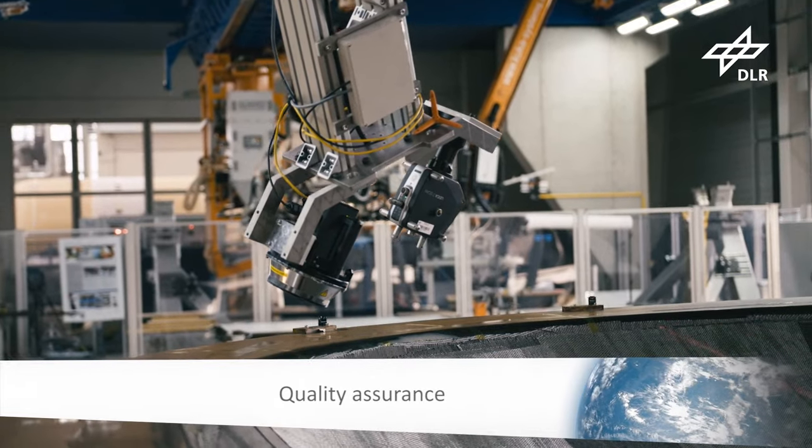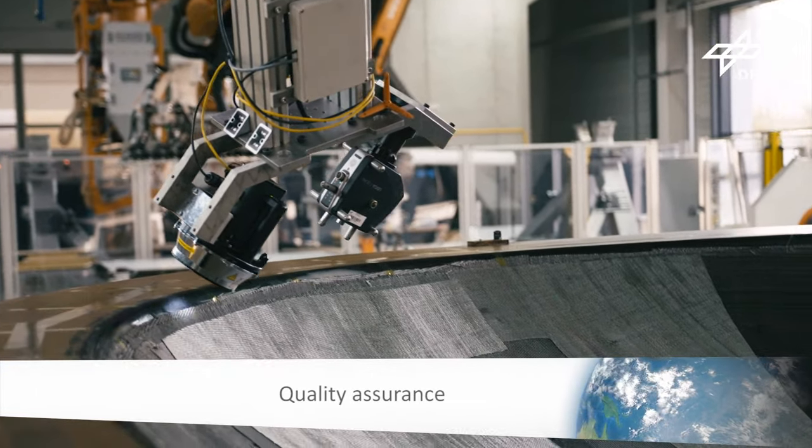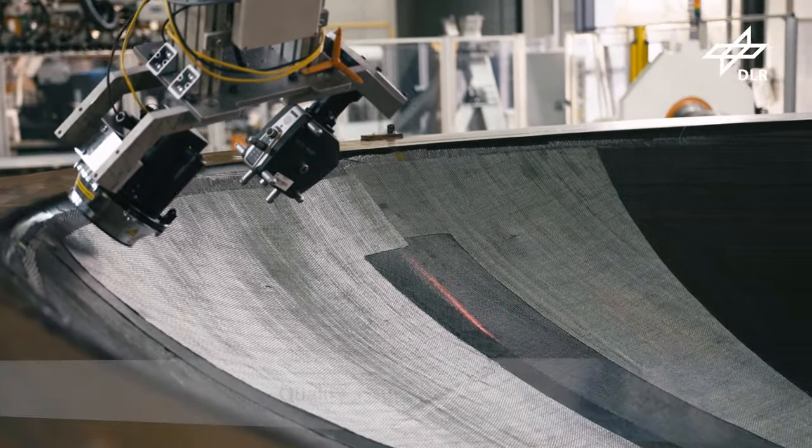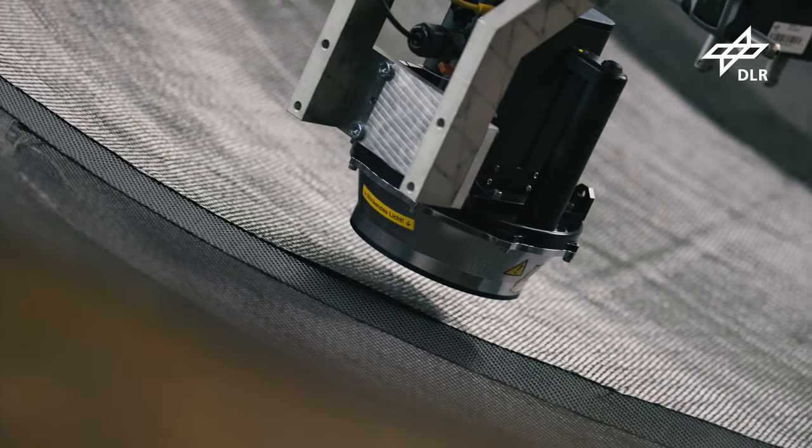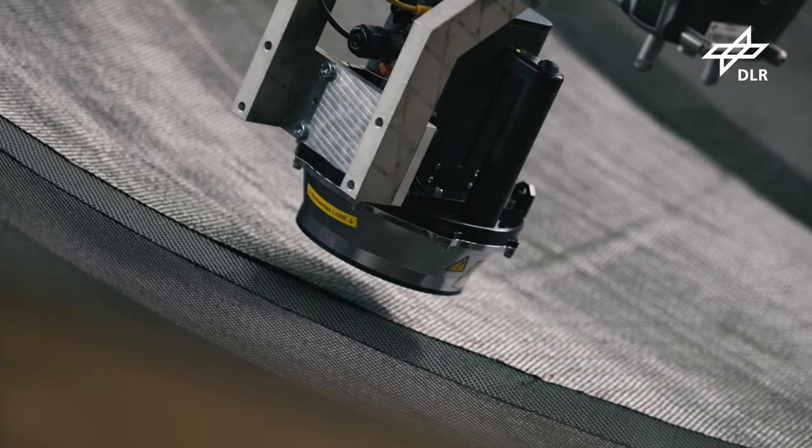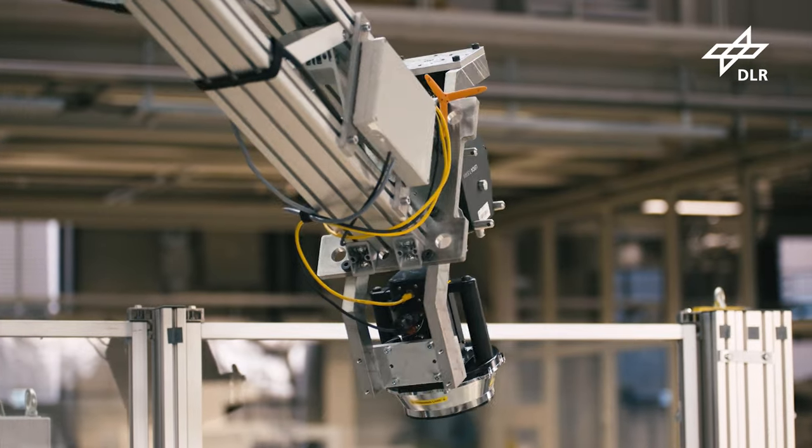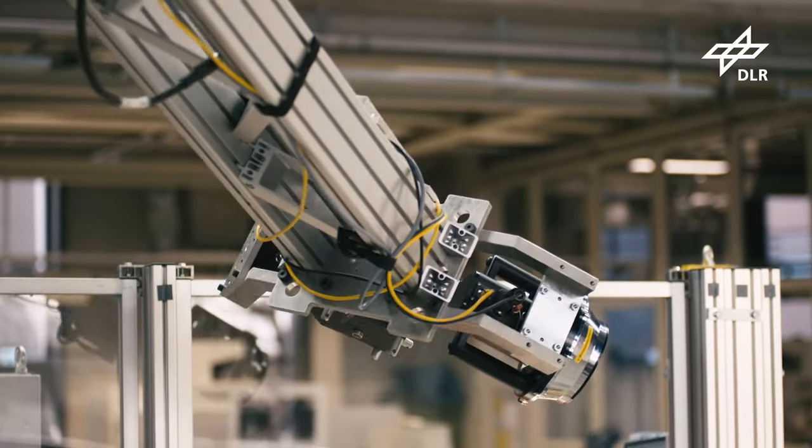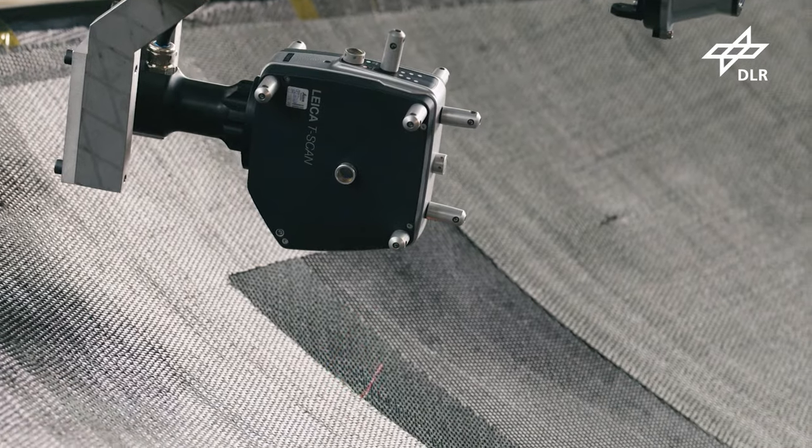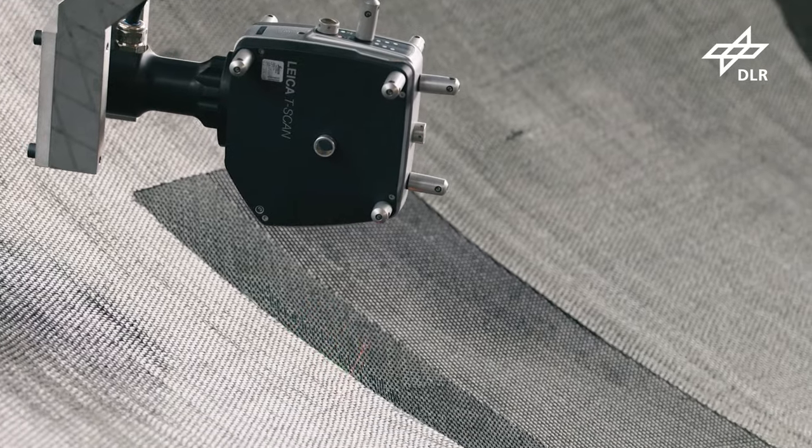The quality of every applied cut piece is verified. For the inspection of the draping quality, a fiber angle camera is used. For the exact detection of the edges of the cut piece, a laser sensor with external positioning is used.